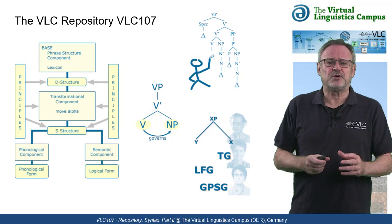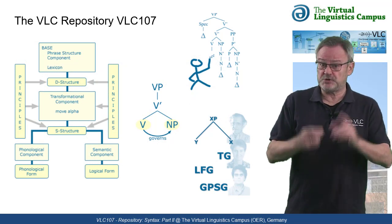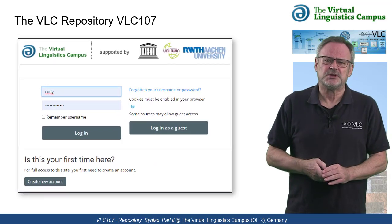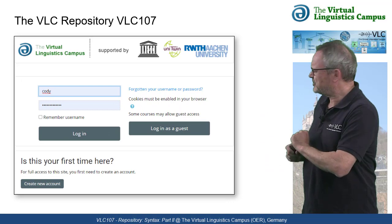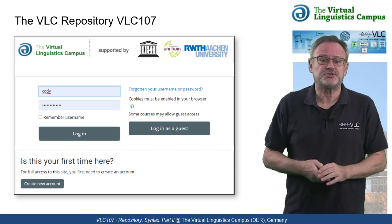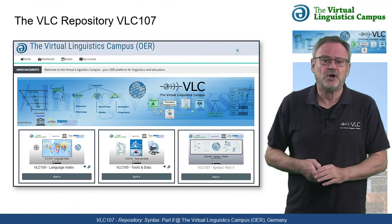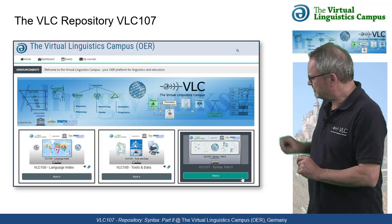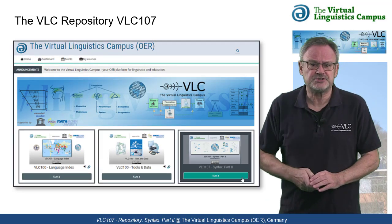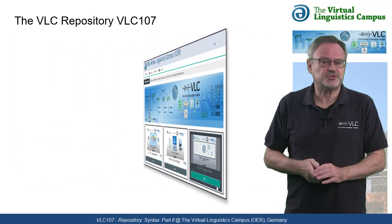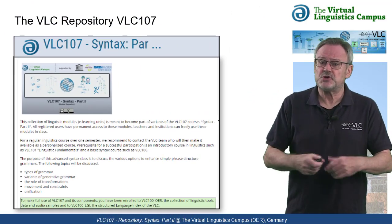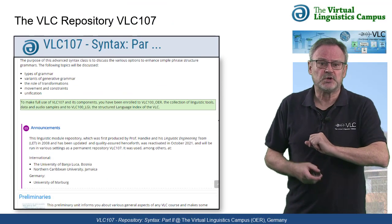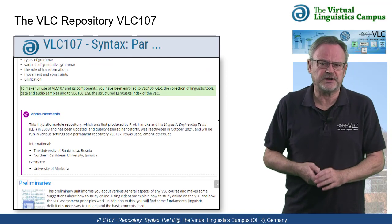If you have an account on the OER VLC website, which is of course free, accessing the repository is simple. Just log in with your personal data and you will find the repository on your personalized dashboard or in your course overview. A click on the bottom of the VLC 107 tile leads you to the repository start site, where you have access to all modules, starting with a preliminary section with advice and help on how to use the VLC 107 repository.